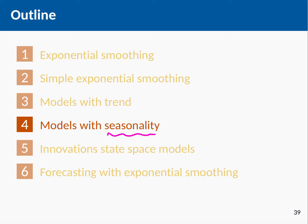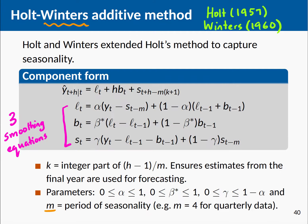In this video we are going to be looking at extending the Holt method — simple exponential smoothing models with trend — to incorporate seasonality. This is really looking at a full-blown model with levels, trends, and seasonality. This type of model was introduced in the 1960s, with Holt's paper in 1957 and Winters' paper.